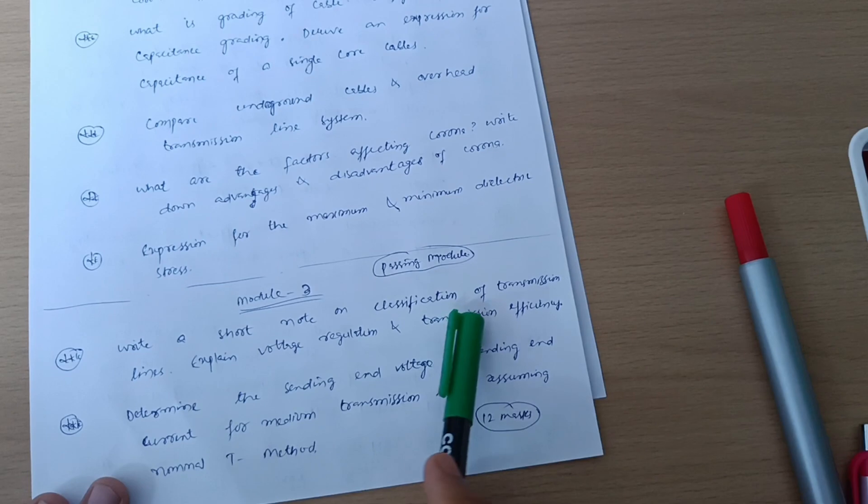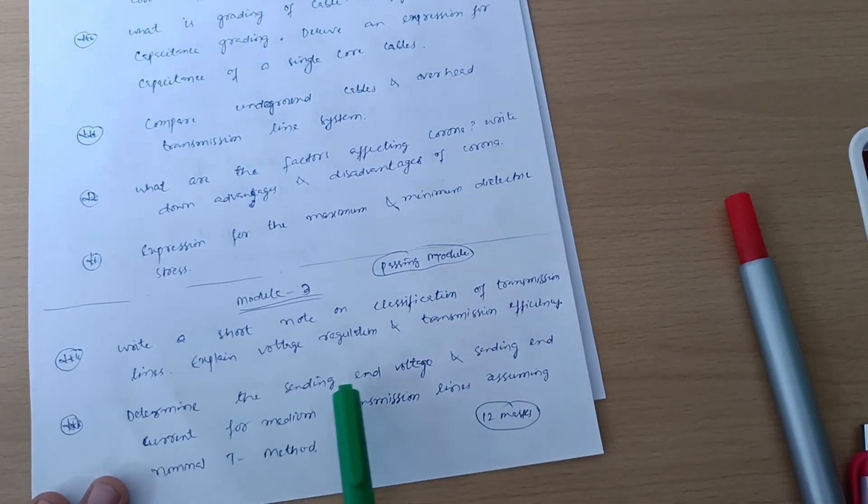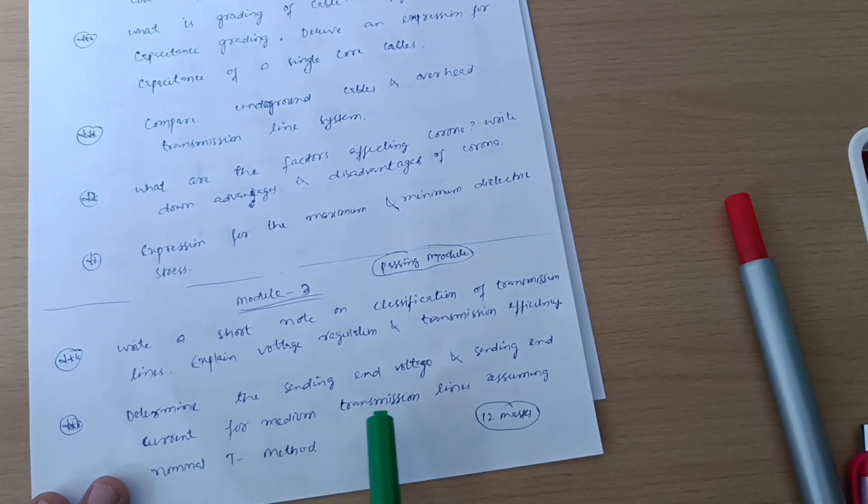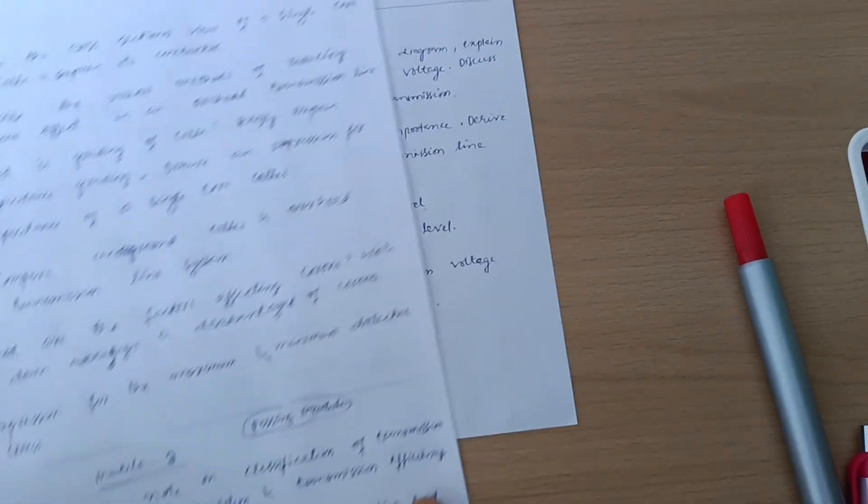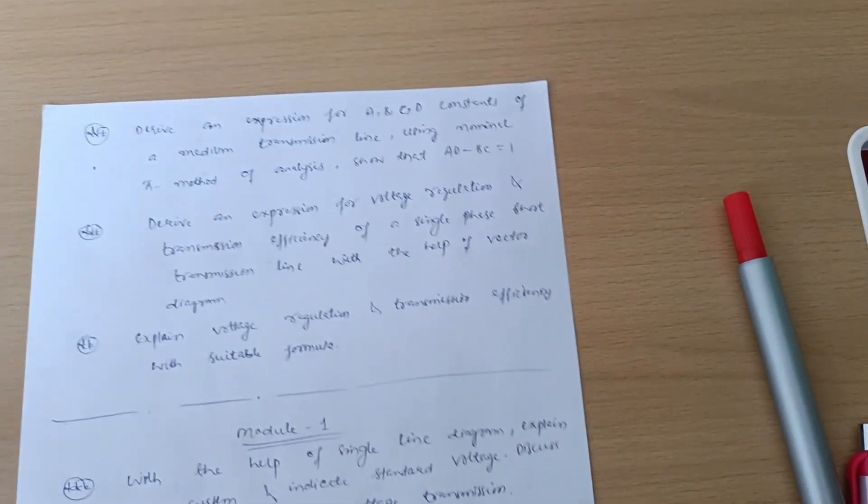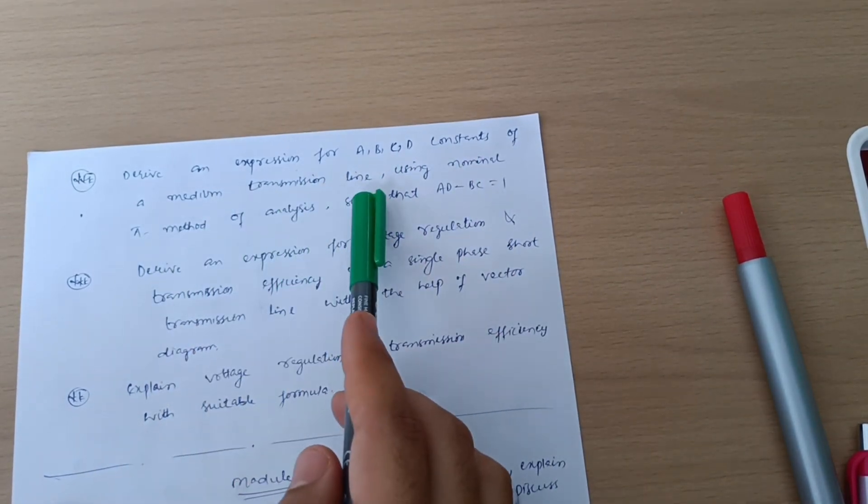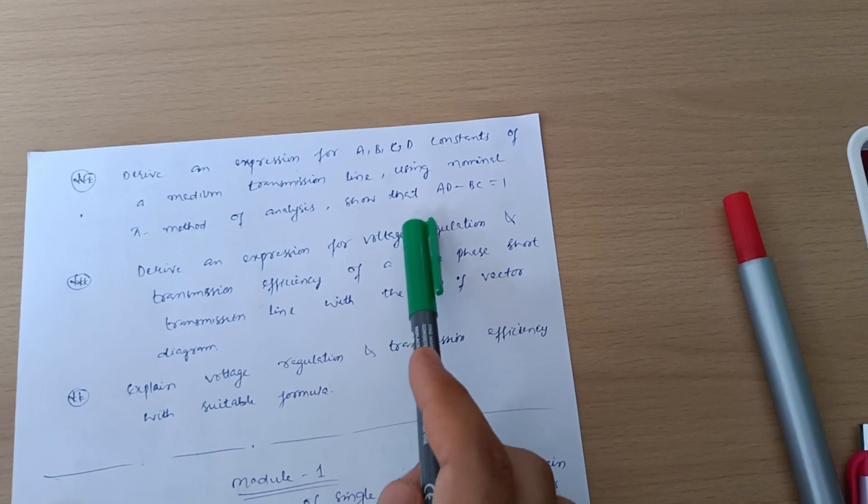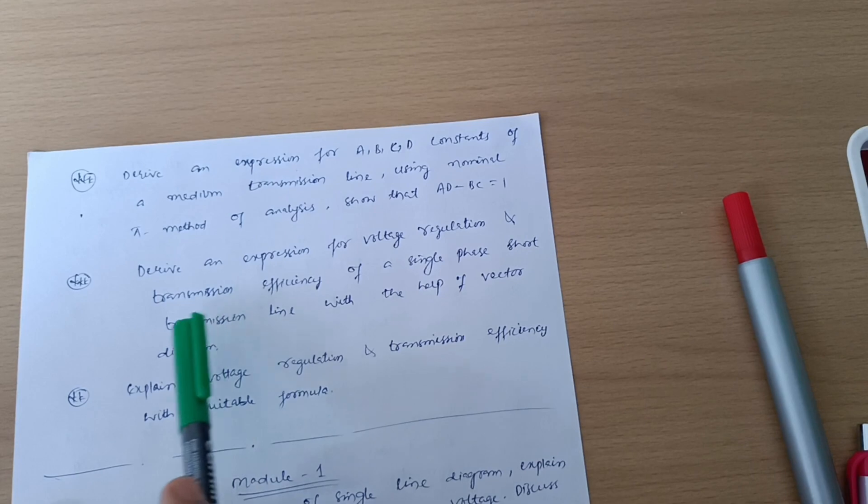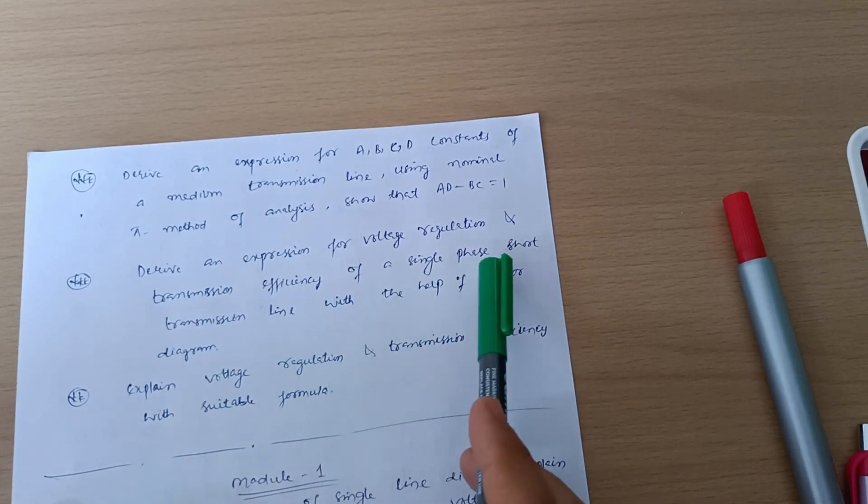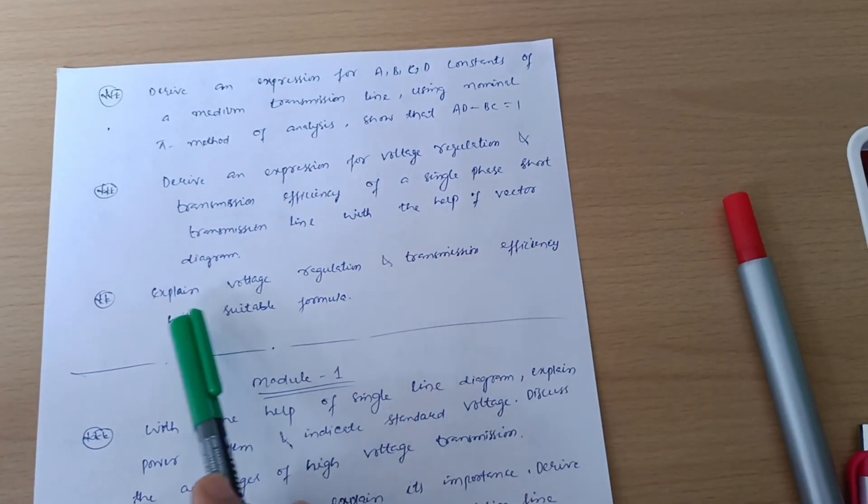Now we have another passing model, Module 3: write a short note on classification of transmission lines. Explain voltage regulation and transmission efficiency. Determine the sending end voltage and sending end current for medium transmission lines assuming nominal T method. Derive an expression for ABCD constants of a medium transmission line using nominal pi method of analysis. Show that AD minus BC is equal to one. Derive an expression for voltage regulation and transmission efficiency of a single phase short transmission line with the help of vector diagram. Explain voltage regulation and transmission efficiency with suitable formula.